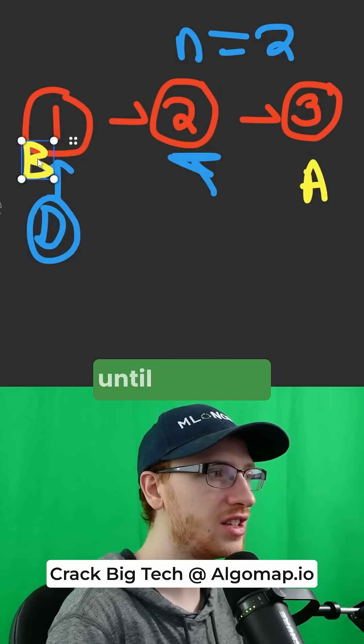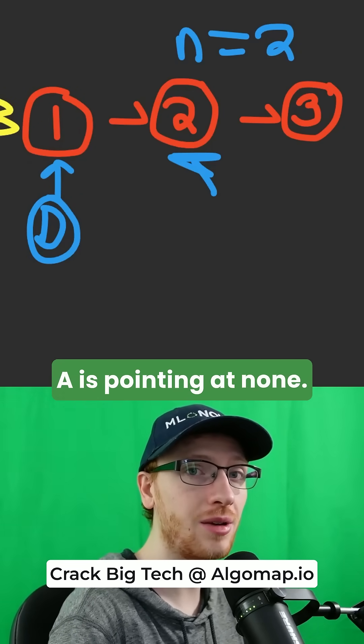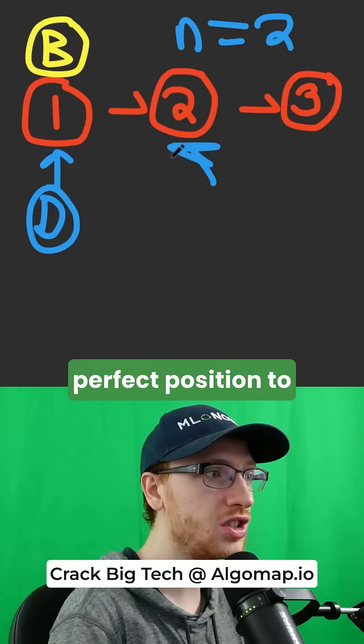Then we move the pointers together until we get to the end of the list. In fact, we're already at the end of the list. a is pointing at none. b is in the perfect position to skip over this node.